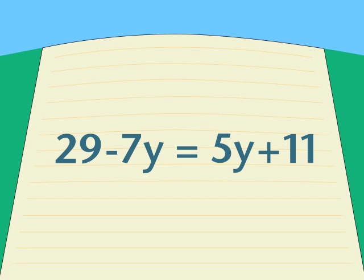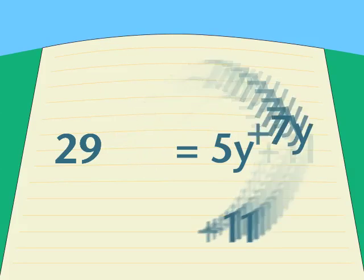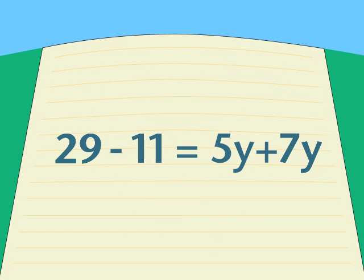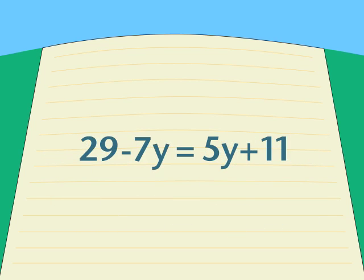Okay so far? At this point we have a choice. To move all the y terms to the left and all the numbers to the right, or just the opposite. Either one is okay. The equations we get will look different for a while, but they'll both give us the same answers.